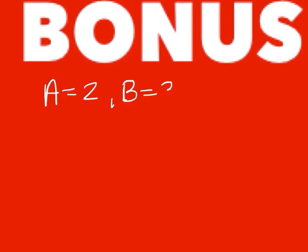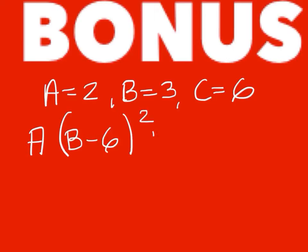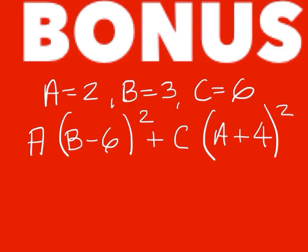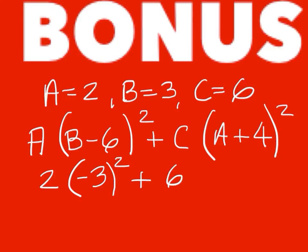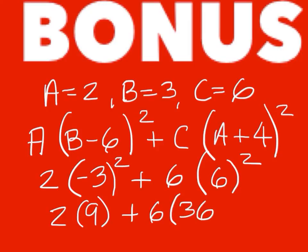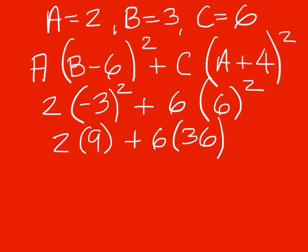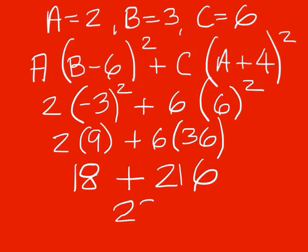The bonus problem is something a little different. We'll make a equals 2, b equals 3, c equals 6. A times the quantity squared of b minus 6, plus c times the quantity squared of a plus 4. For the bonus problem, b minus 6 is really 3 minus 6, which is negative 3, and you have to square that and multiply it by 2. You get 2 times 9 plus 6 times 36, which gives 18 plus 216. 18 plus 216 is 234.